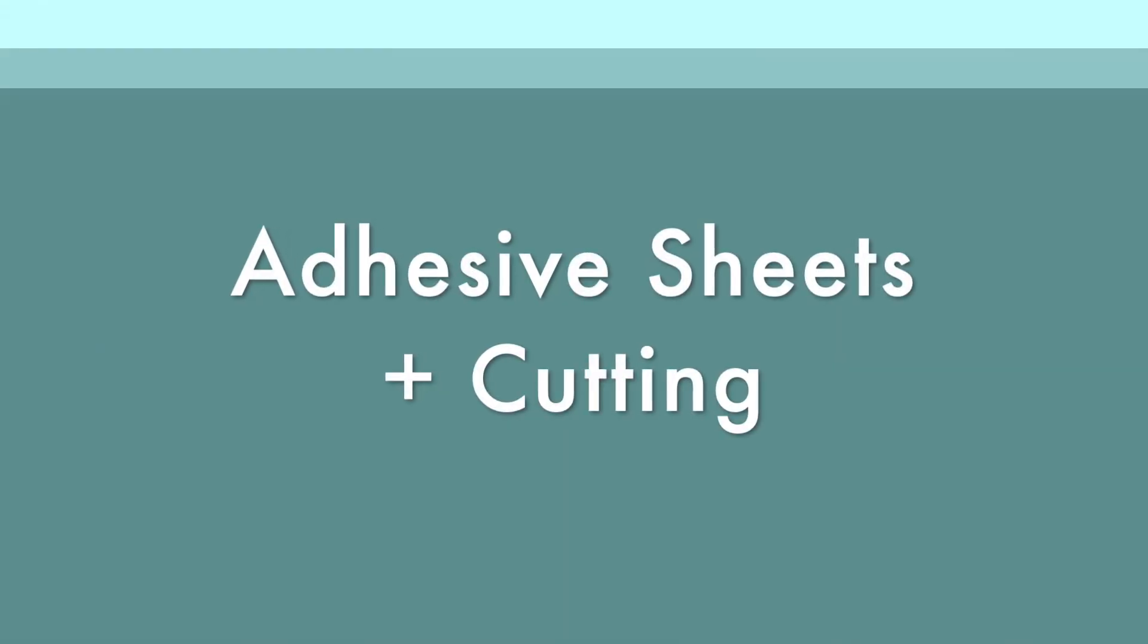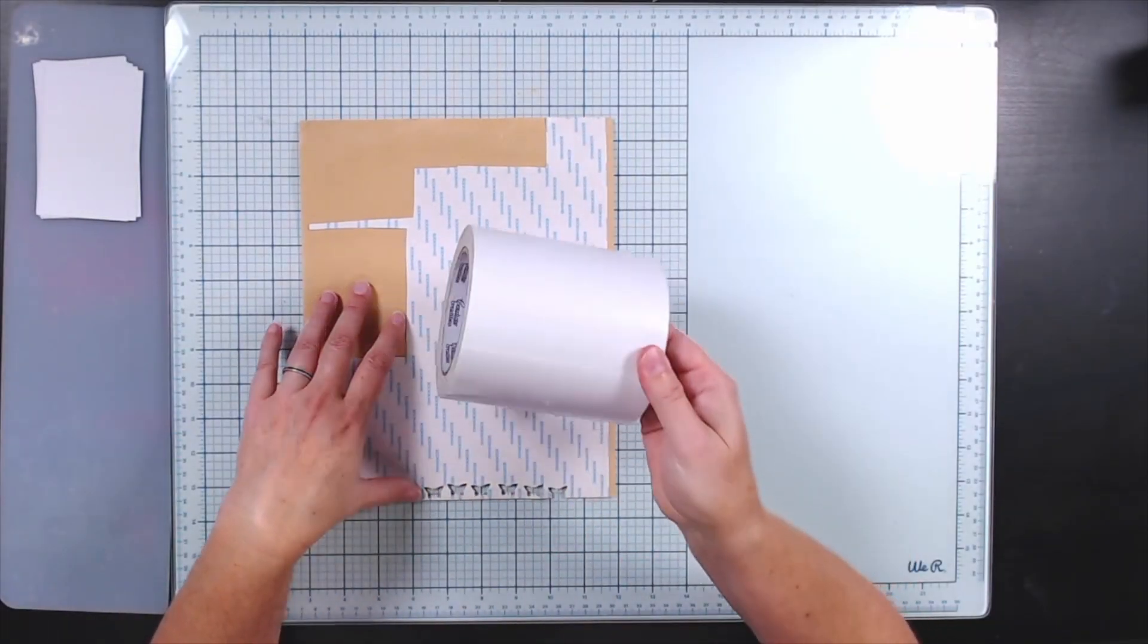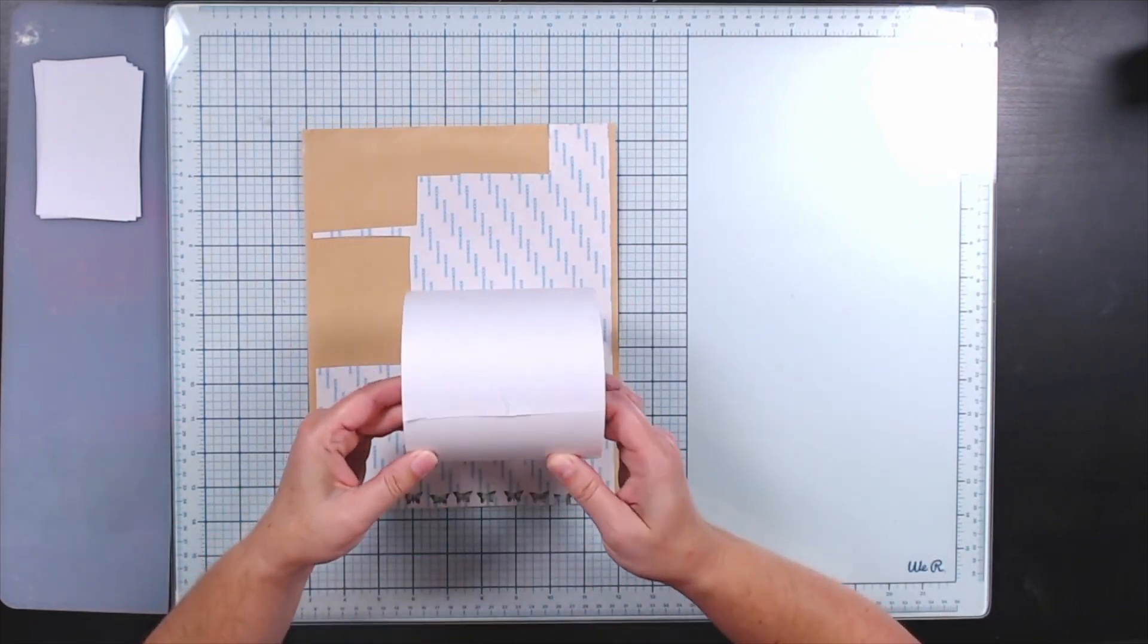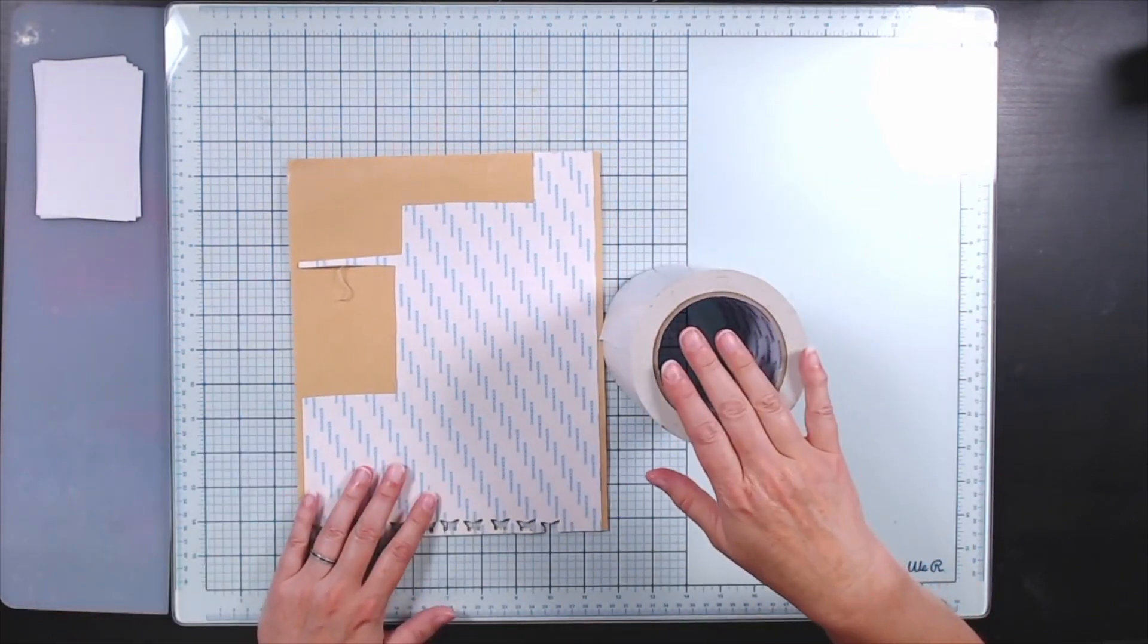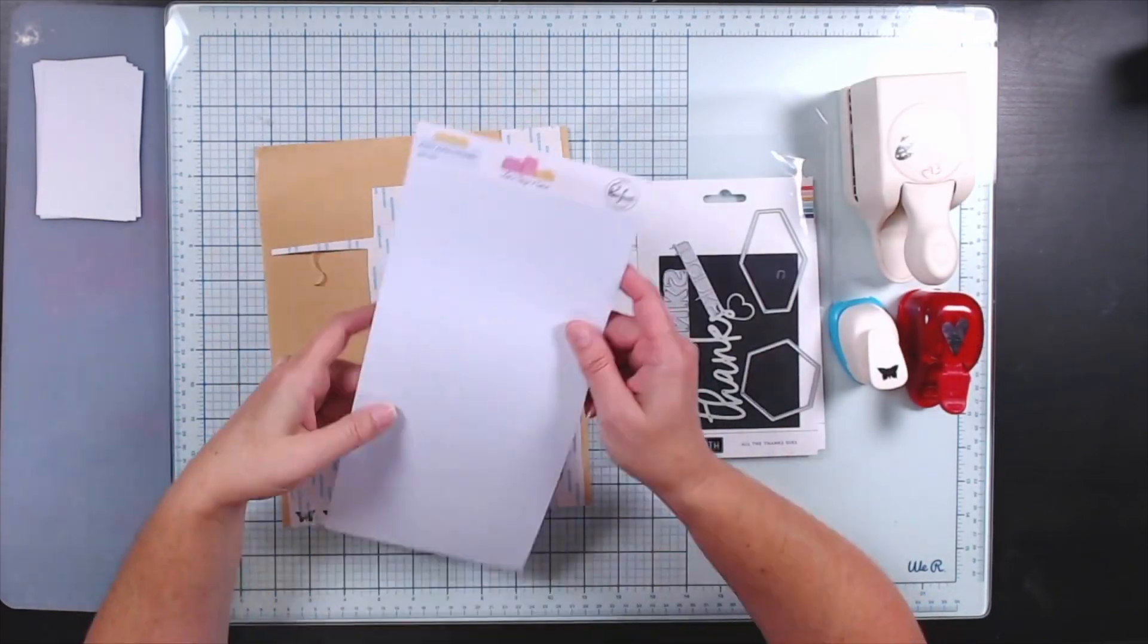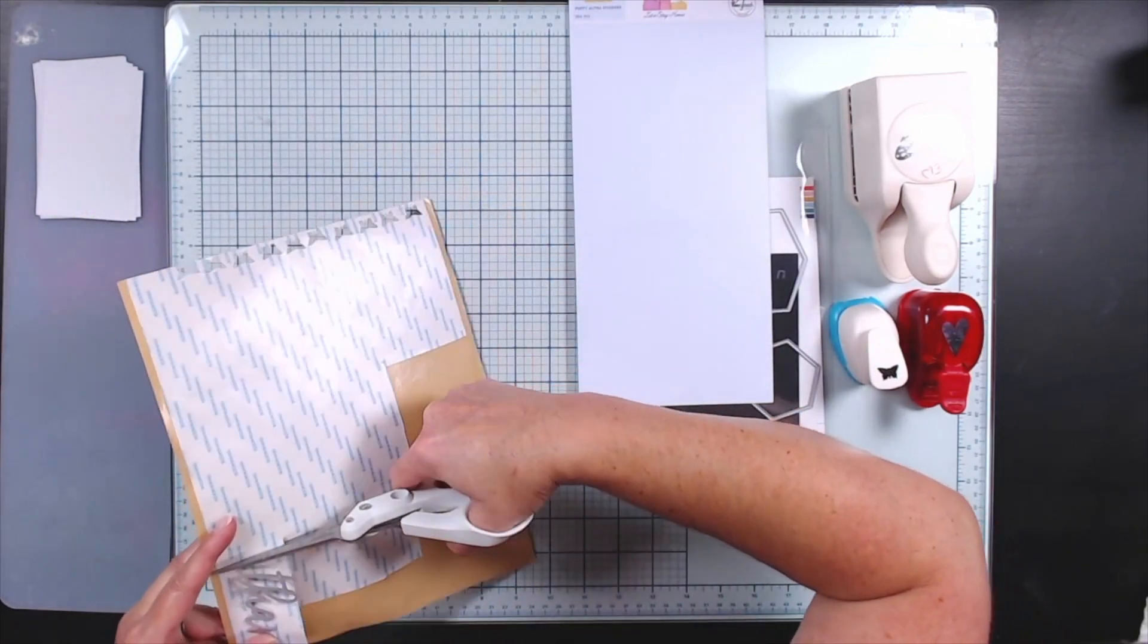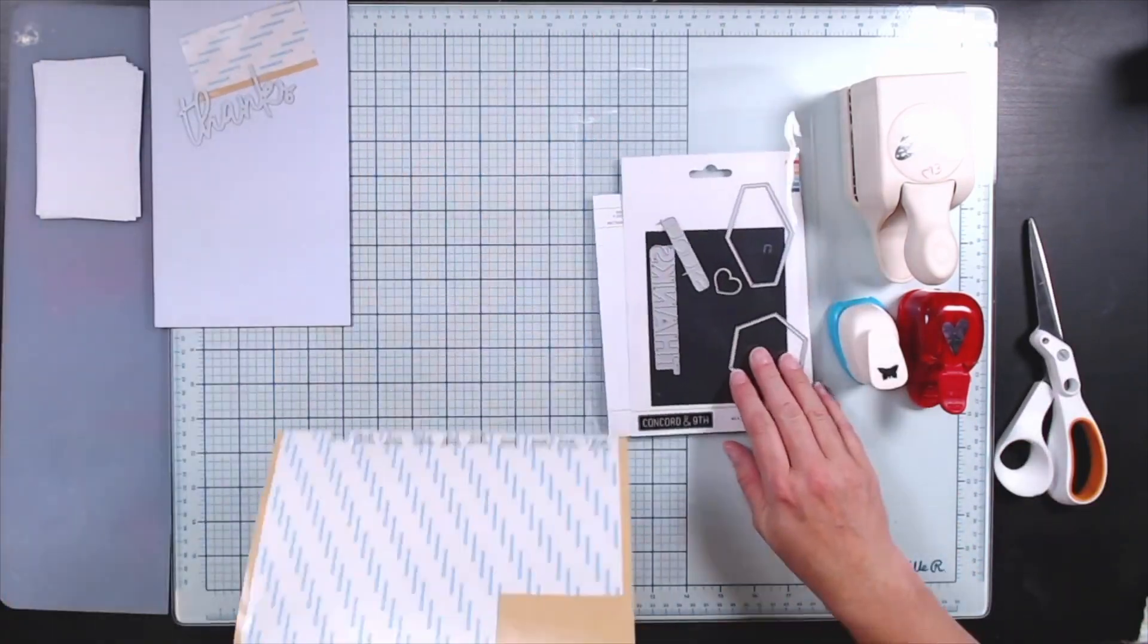Next up we're going to talk about adhesives that you may not have in your stash, but I recommend having at least some on hand, and that is adhesive sheets. Now you can do this technique as well as other techniques with these adhesive sheets, so they're good to have on hand. When I say sheets, some of these do come in wide rolls that you can use like sheets. Because these are double-sided adhesive sheets, you're going to need to stick them down to some kind of product.